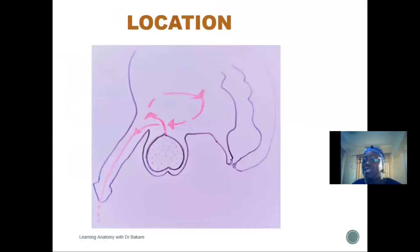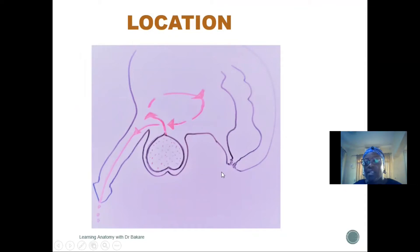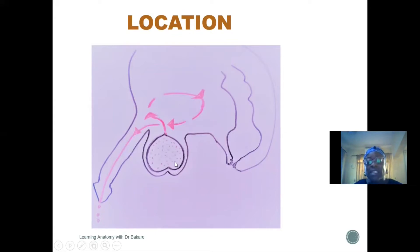Location of the scrotum: where is the scrotum located? Because the scrotum houses the testes, and the testes is located behind the penis. Between the anus posteriorly and the penis anteriorly, we have the scrotum, and within the scrotum we have the testes. So the scrotum is located between the penis and the anus.